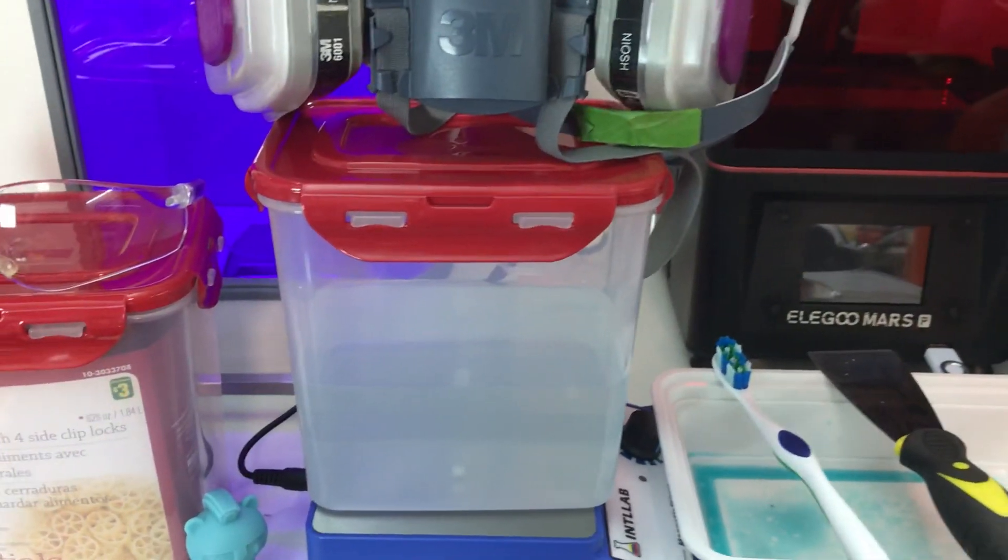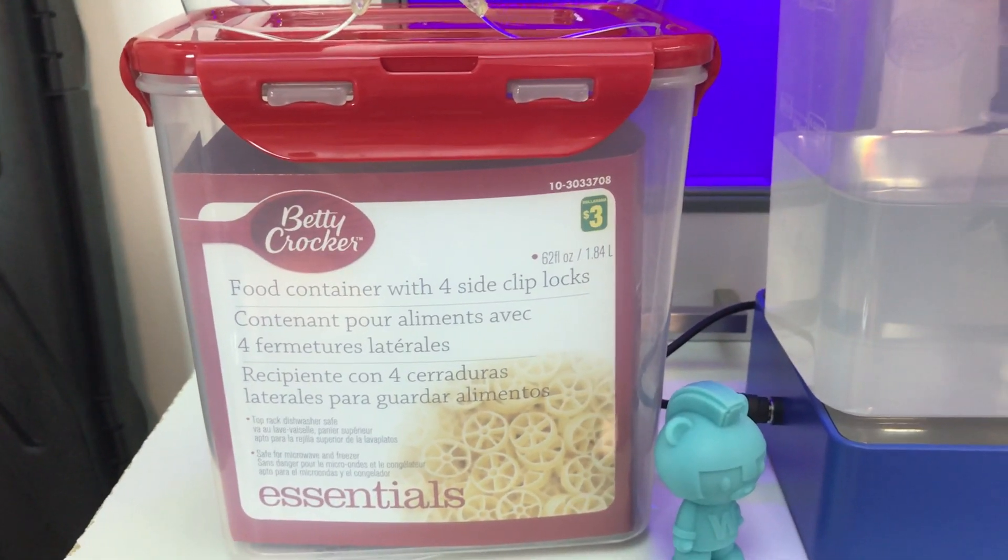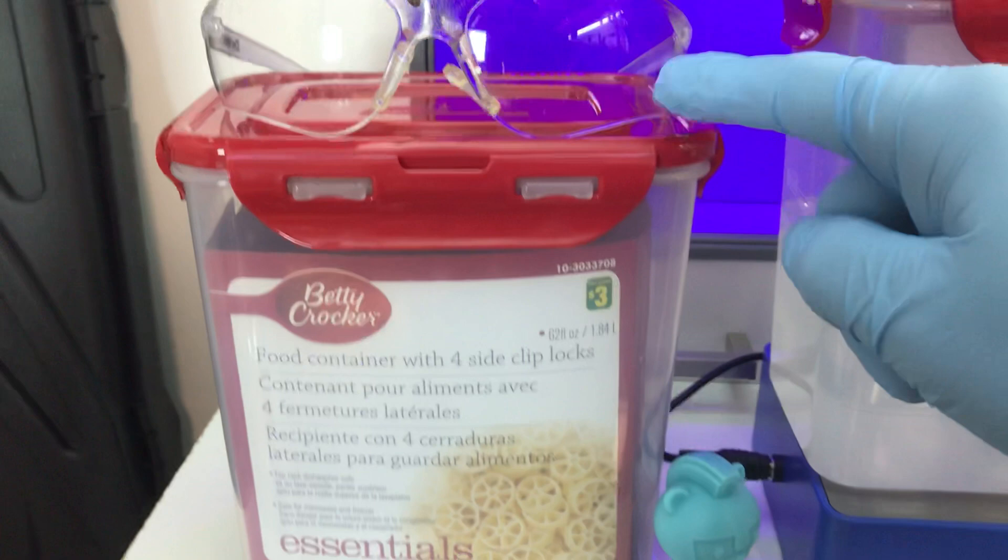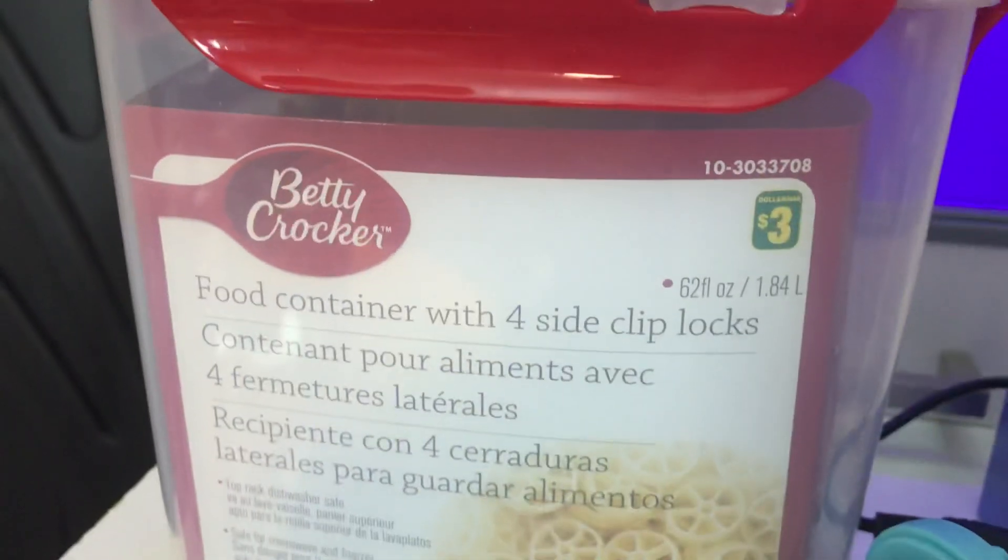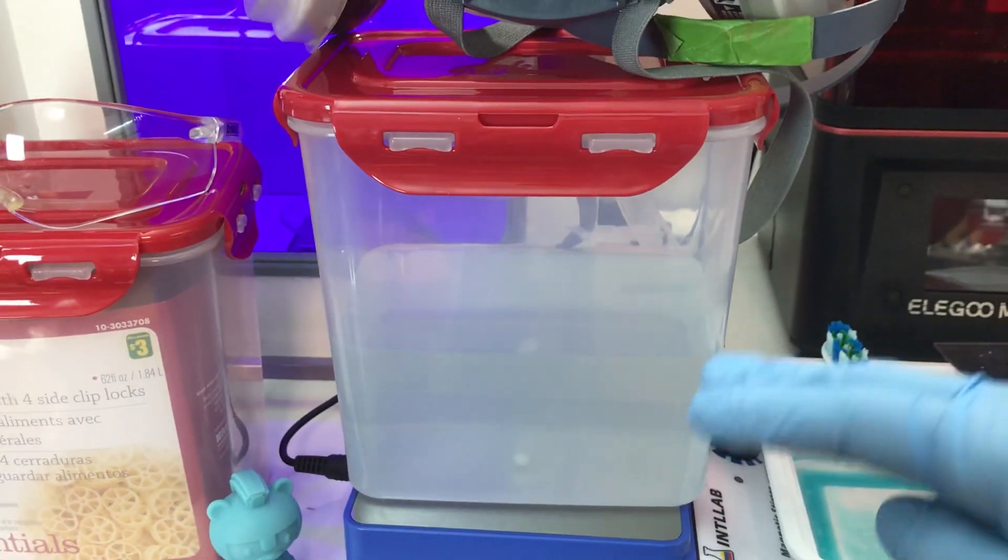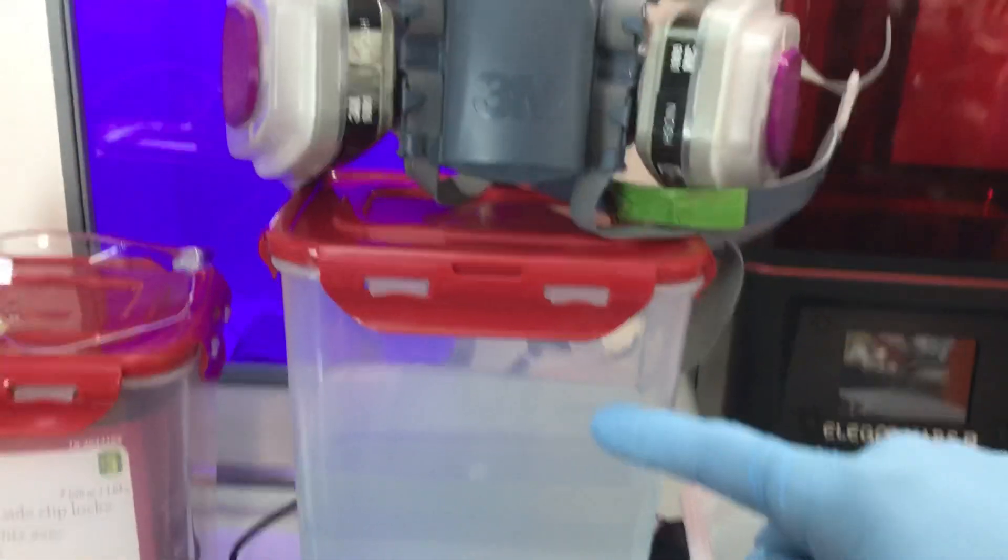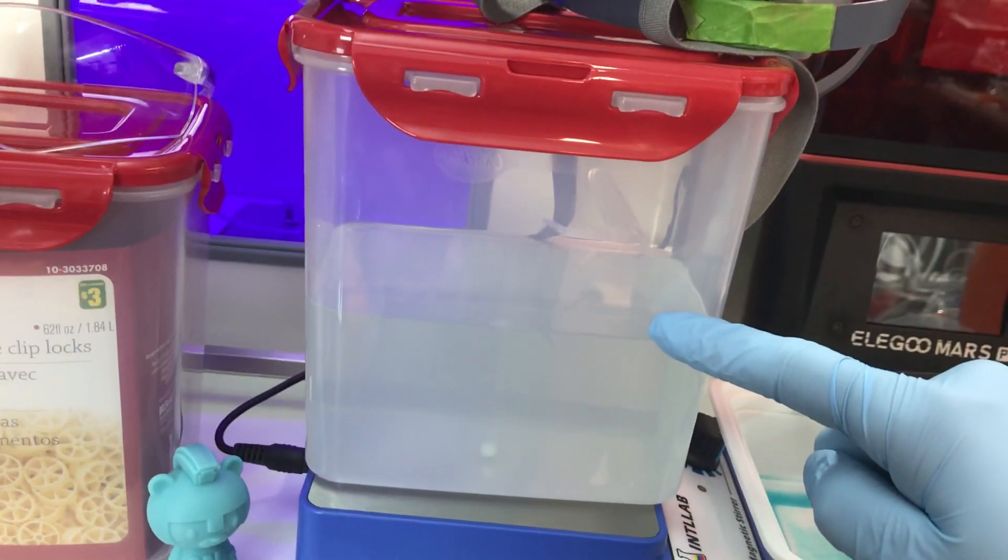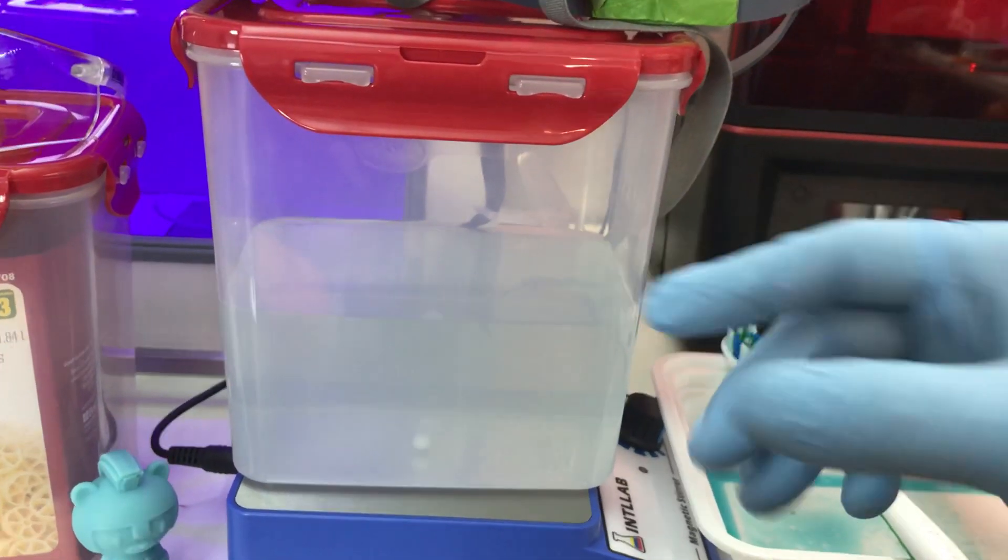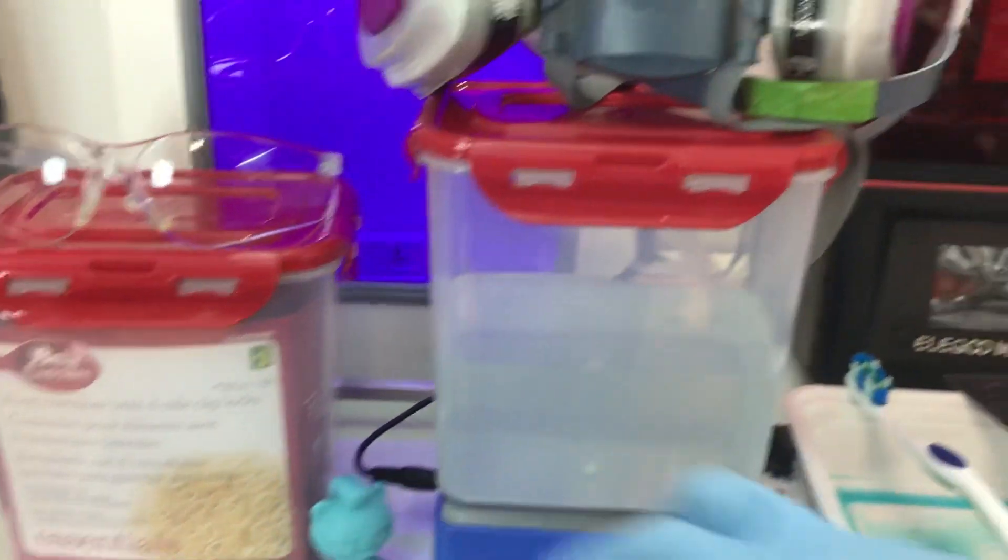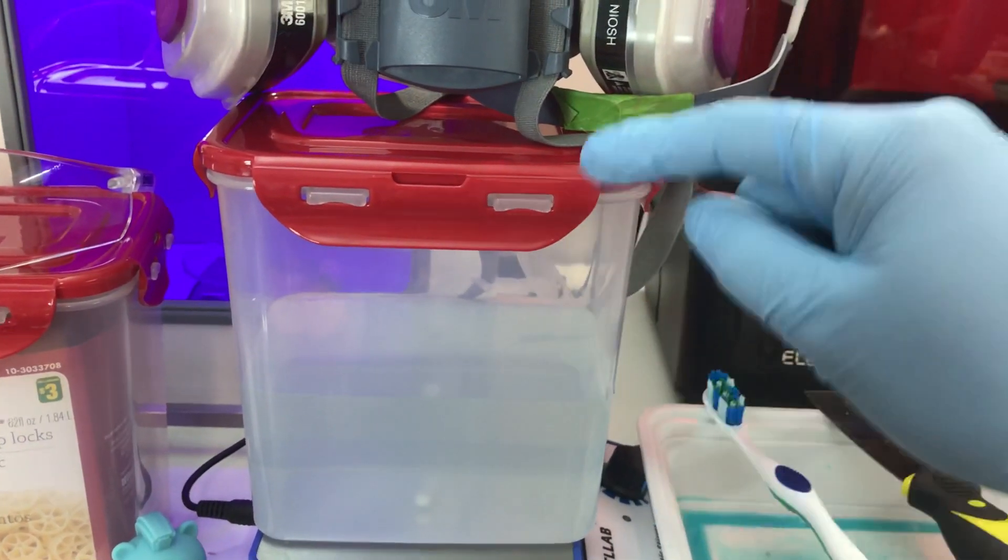I found these great containers at a dollar store—Betty Crocker Essentials food containers with side clips. They have a locking lid with a silicone seal, and I got two for only $3. They're great for cleaning prints. If you put the Elegoo bed in here, it goes in about halfway and still has about a quarter inch of room all around, so you can slosh it around and push it up and down and dunk it. The advantage is it fits the bed perfectly and has tons of room depending on your print height to rinse it.